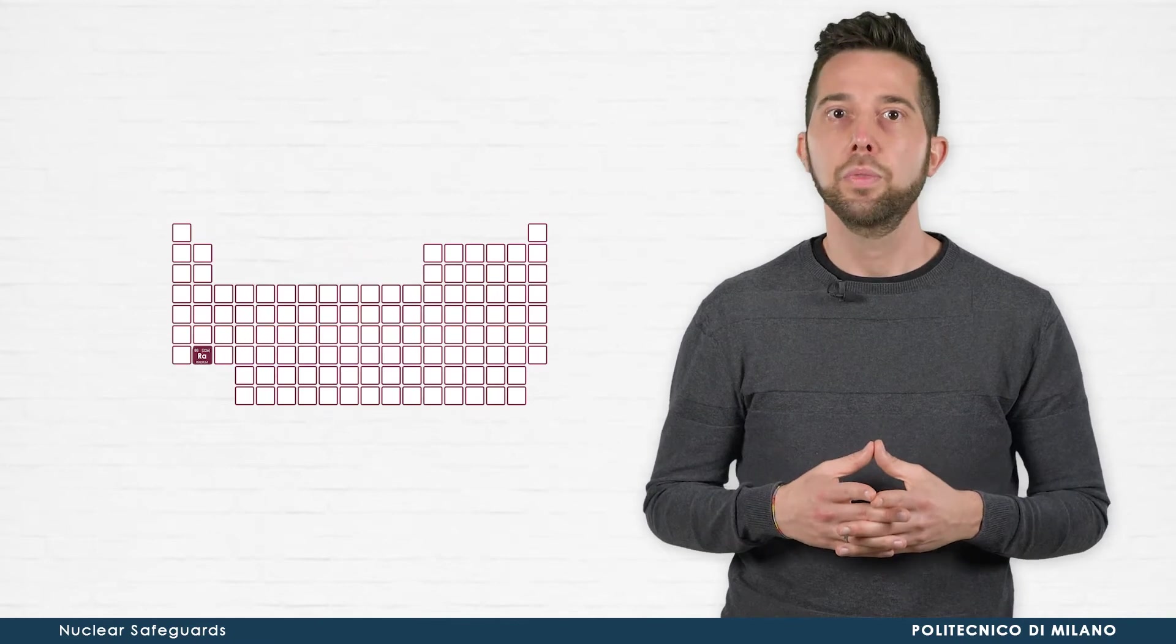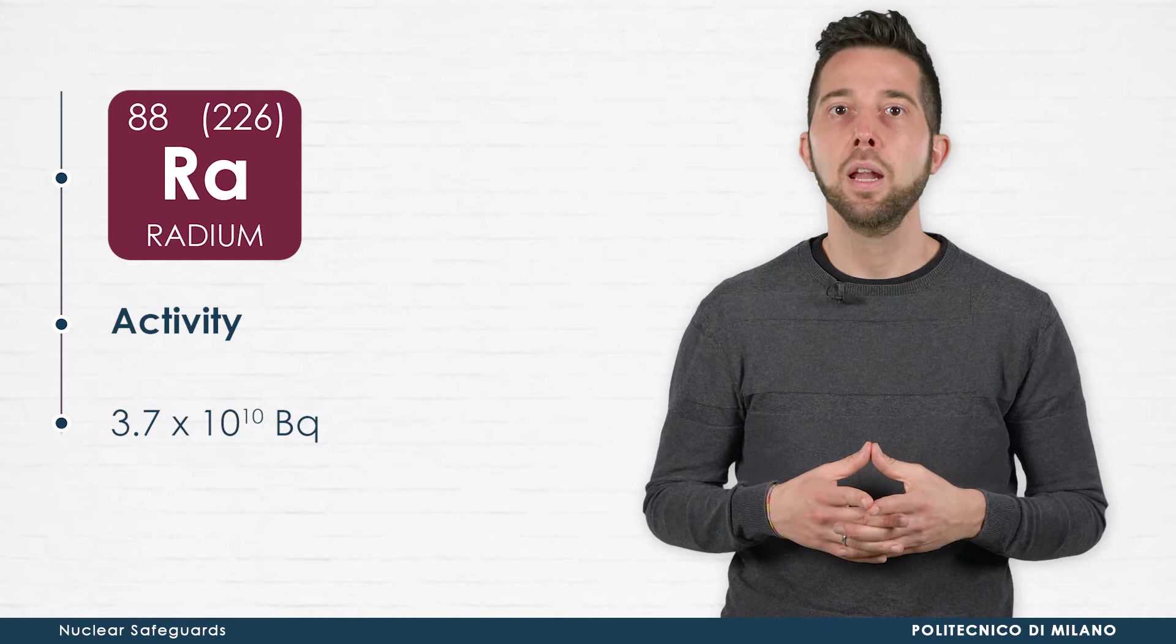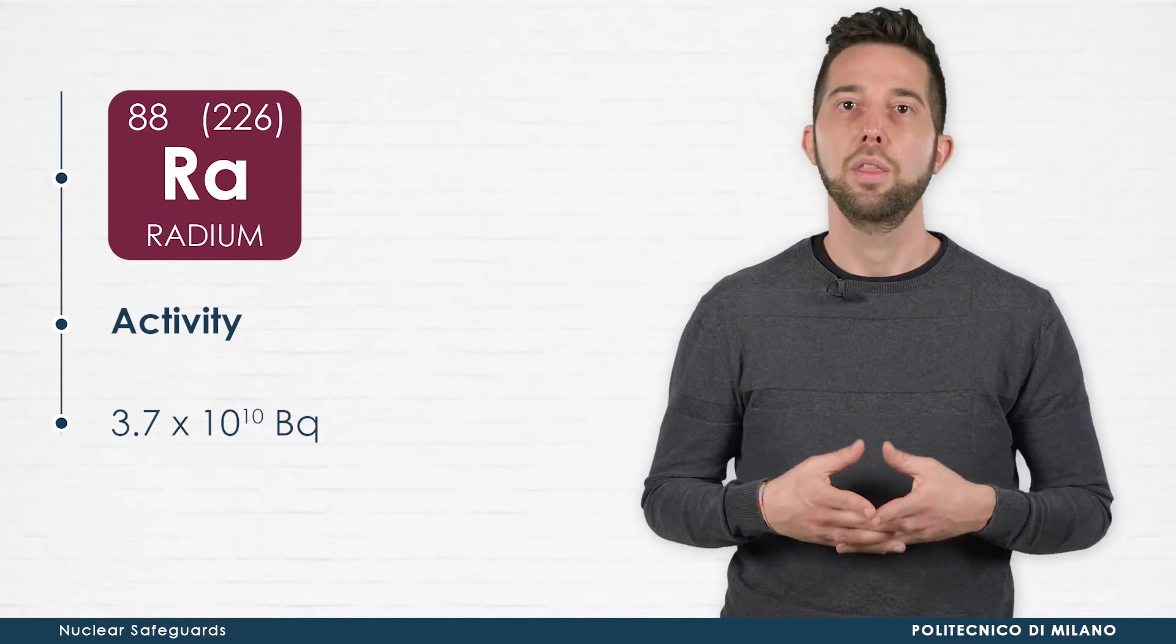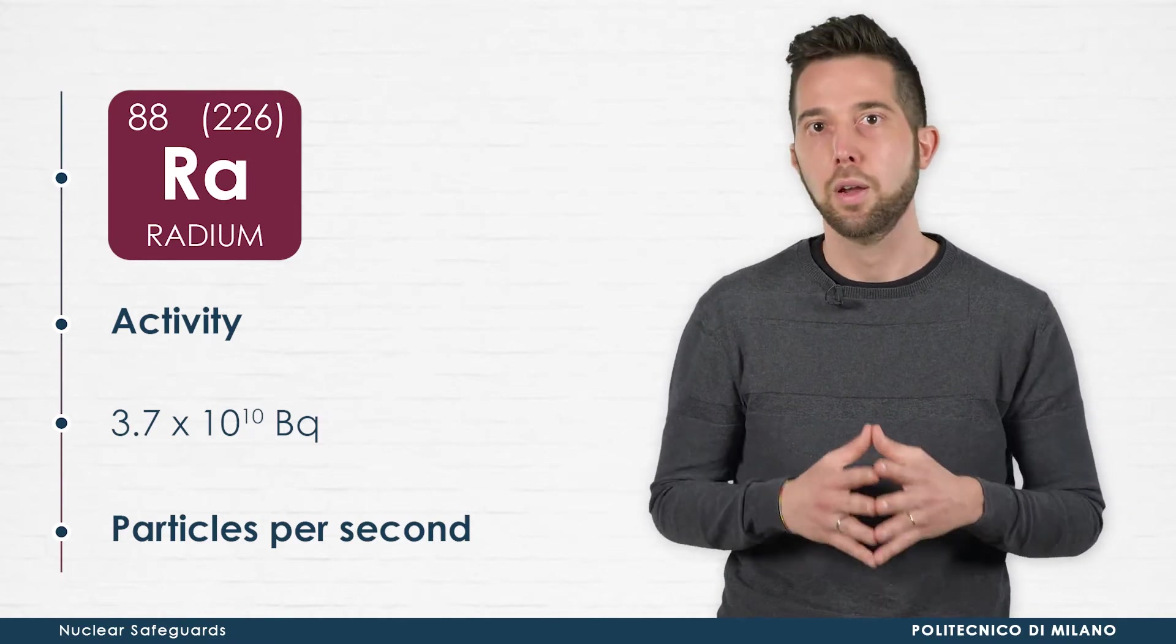1 gram of radium, for example, has an activity of 3.7 times 10 to the 10th Becquerel, therefore it emits 3.7 times 10 to the 10th particles per second.